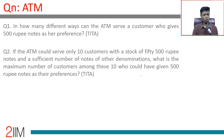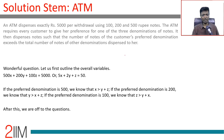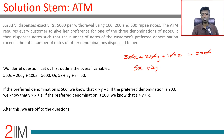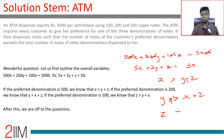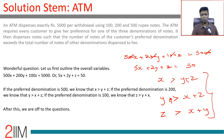Setting up the equation: 500x + 200y + 100z = 5000, which simplifies to 5x + 2y + z = 50. If 500 is the preferred denomination, then x > y + z. If 200 is preferred, then y > x + z. If 100 is preferred, then z > x + y.